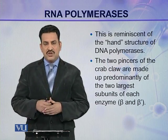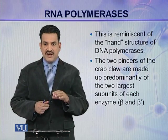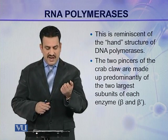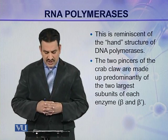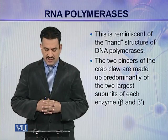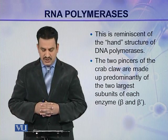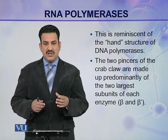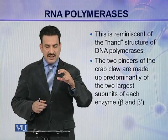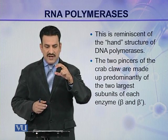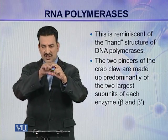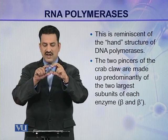You might remember that the hand structure of DNA polymerase resembles a hand. The two pincers of the crab claw are made up of predominantly the two largest subunits of the enzyme, that is beta and beta prime. So the shape of this RNA polymerase is like a crab's claw, with the two pincers being beta and beta prime.